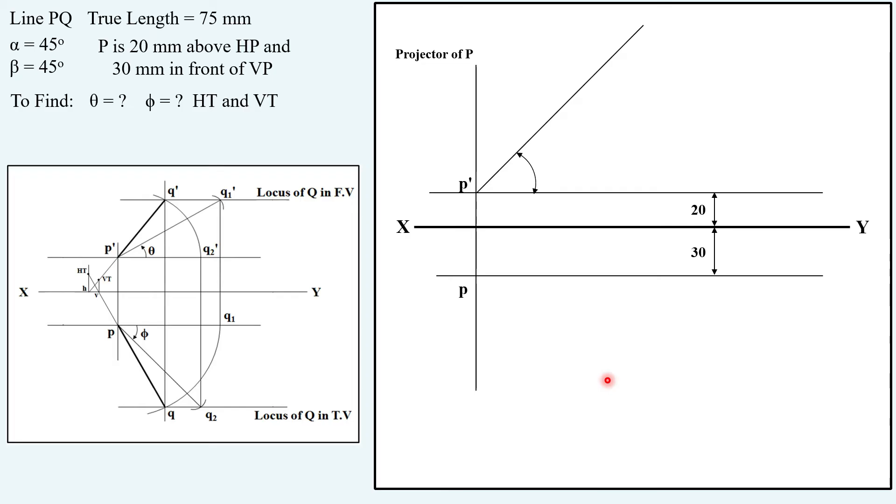Taking the angle mentioned as 45 degrees, we have to draw the front view and top view lines. As far as the given data is concerned, we have used everything mentioned in the data except the true length. But we cannot take the true length right now because there is no angle or locus position mentioned.